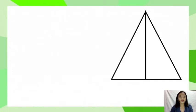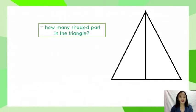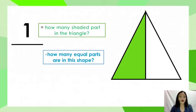Let's take a look at this picture. How many shaded parts in the triangle? One. So the numerator is one. How many equal parts are in this shape? Let's count. One, two. So the denominator is two. We read it as one half.